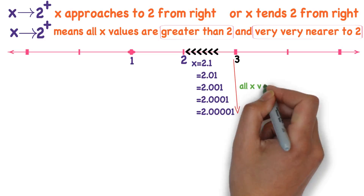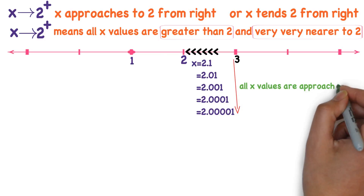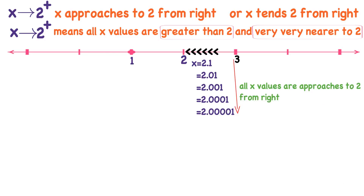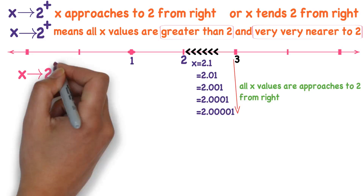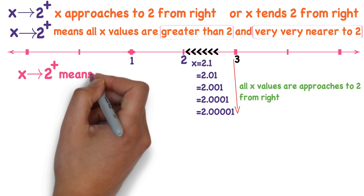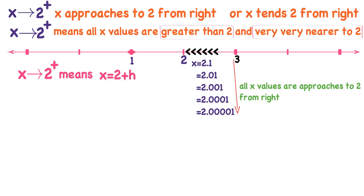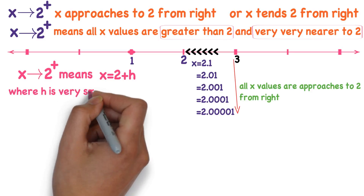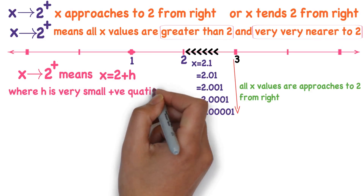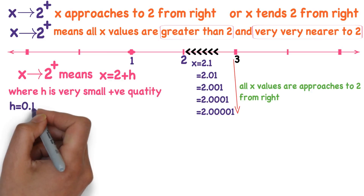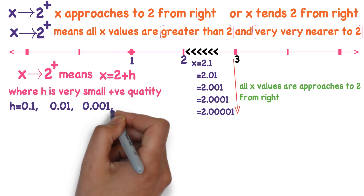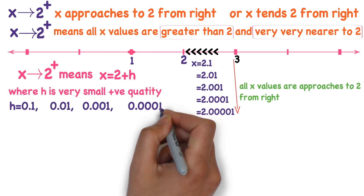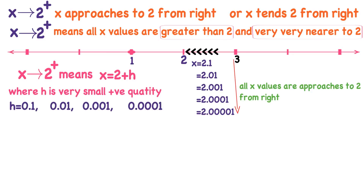So all x values approach to 2 from right. In other words, x equals 2 plus H, which is the right neighborhood of 2, where H is a very small positive quantity. For example, take H = 0.1, substitute in 2 + H, you get 2.1. Take H = 0.01, substitute in 2 + H, you get 2.01.